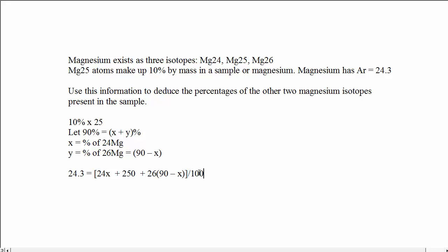So we put over 100, which we could take to the other side in a moment. So let's take the 100 to the other side. So that's 100 times 24.3 makes 2430 equals 24x plus 250 plus 26 times 90.